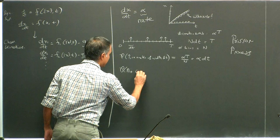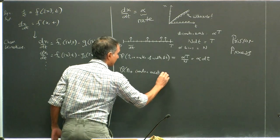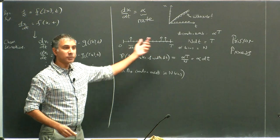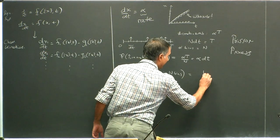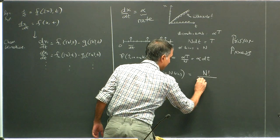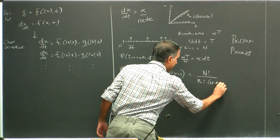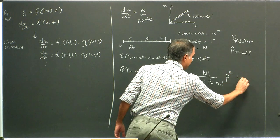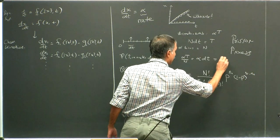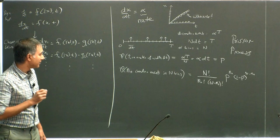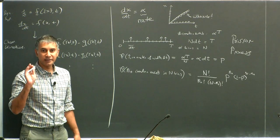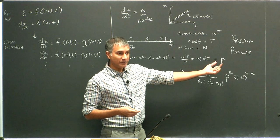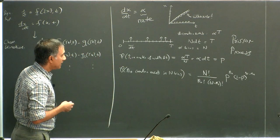The probability that there are n₊ creation events in N bins is given by: N!/(n₊! × (N - n₊)!) × p^(n₊) × (1-p)^(N-n₊), where p = α×dt. This is just the Bernoulli distribution. The interesting thing is that this p is very very small, so we need to take the limit of small p.